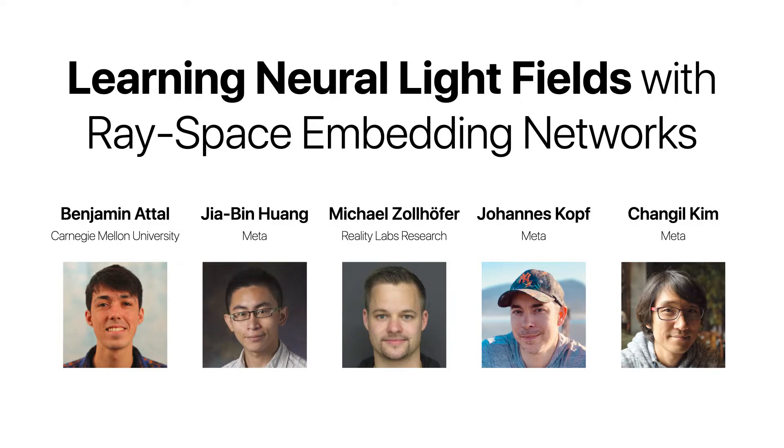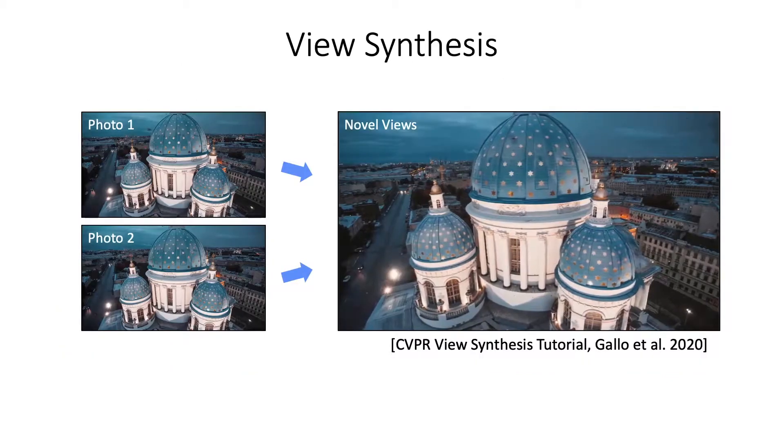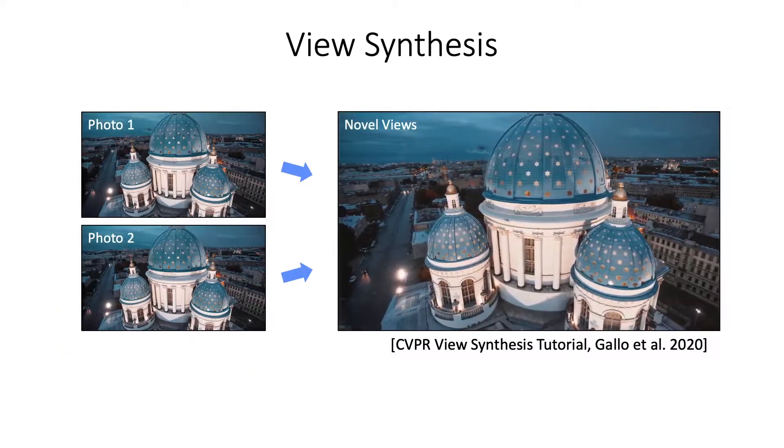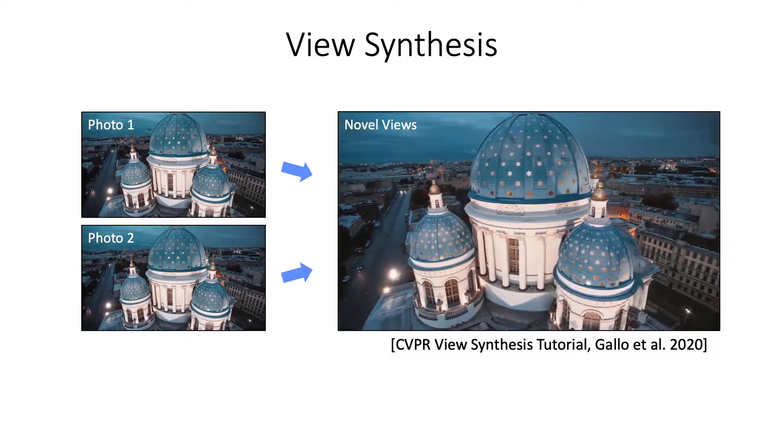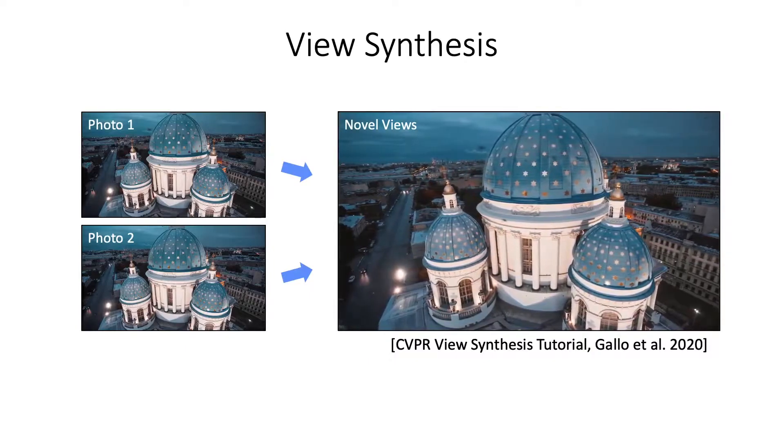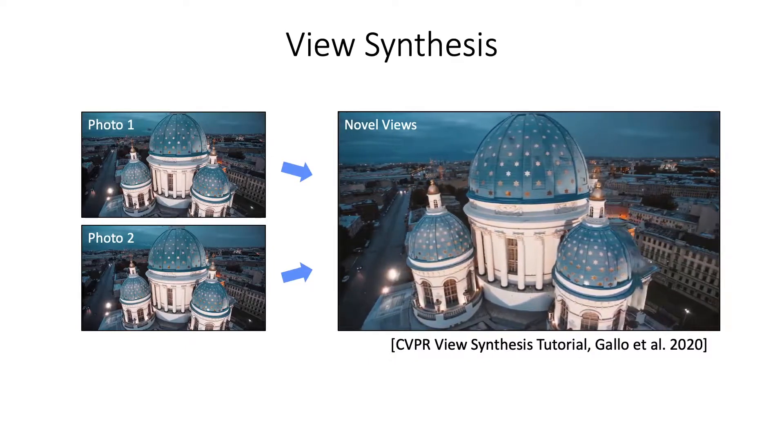We present neural light fields with ray space embedding networks. View synthesis is an important problem in computer vision and graphics. The goal of view synthesis is to render new views of a scene from a set of posed input images.